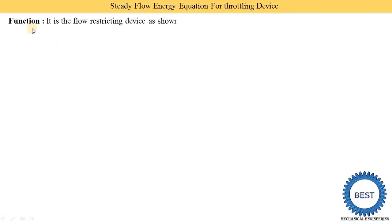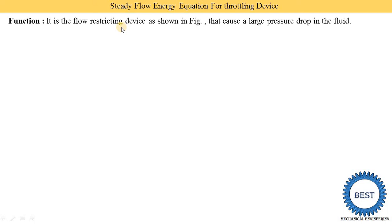The function of the throttling device is it is a flow restricting device. Flow restricting device means there is some obstacle created in a flow, so that is called a restriction device. And due to these restrictions, a large pressure drop in the fluid is done.